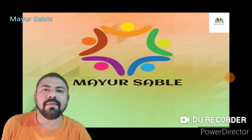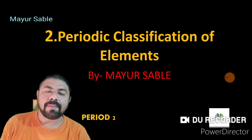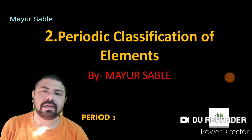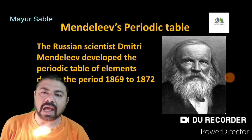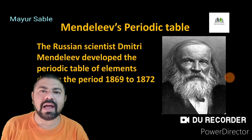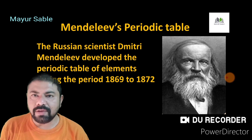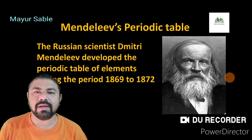Welcome students. In this video we are going to study the periodic properties of elements, along with some interesting scientists and various types of classification. In the last video we studied the classification of elements given by Döbereiner and Newlands, called Döbereiner's Triads and Newlands' Octaves. Today we are going to see the next type of classification, which is called Mendeleev's Periodic Table.